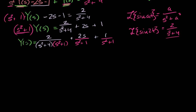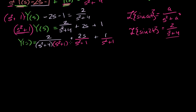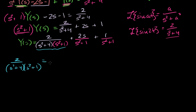In order to take the inverse Laplace transform of this, I need to get it into simple fraction form. This really is the hardest part of these problems — the algebra of breaking this thing up. I'm going to do partial fraction decomposition on 2 over (s squared plus 4)(s squared plus 1), breaking it into one fraction with denominator s squared plus 4 and another with s squared plus 1.